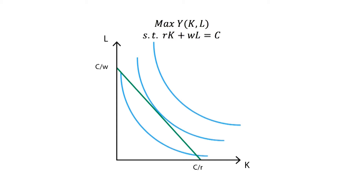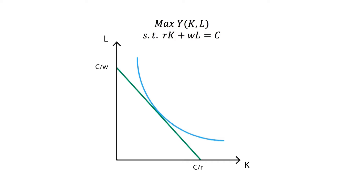Firms are able to choose different isoquant lines. However, there is only one that meets both conditions of the highest output levels and budget compliance. This optimization solution will be located at the exact point where the isocost line is tangent to the production function. Given the properties of the isocost and the production function, one and only one solution is possible.